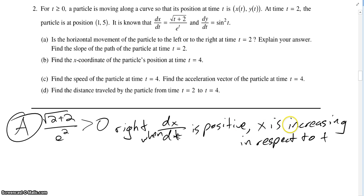And then find the slope of the path of the particle at time t equals 2. So right now we're looking for at t equals 2, the dy/dx. And so the way we're going to solve that is by doing dy/dt over dx/dt at t equals 2. And this is all a calculator problem, so we can solve this out.